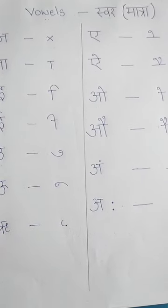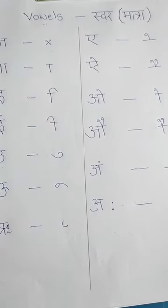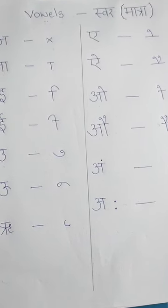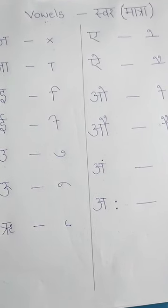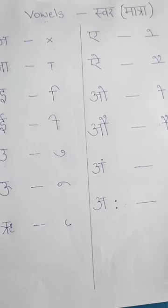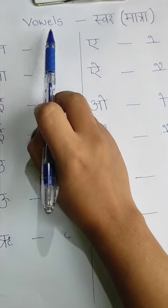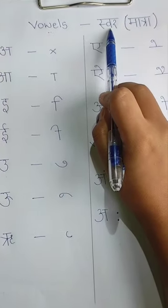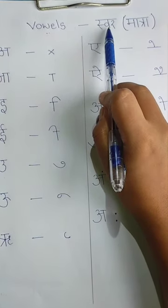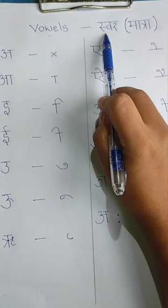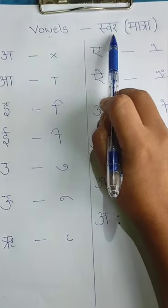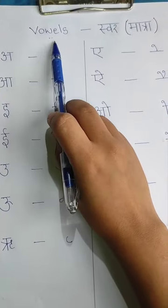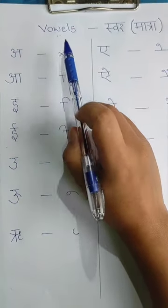Okay students, I know you all are familiar with the vowels and consonants, but since this is the first class, we'll revise all of them again. To begin with, vowels. Vowels in Hindi is said as swar — I repeat, it is said as swar. And also we will learn the matras, which are the signs of the vowels.